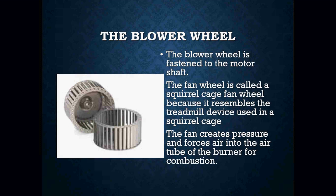The blower wheel is fastened to your motor shaft. The fan wheel can also be called a squirrel cage fan wheel because it resembles a treadmill device used in a squirrel cage. The fan creates pressure and forces air into the air tube of the burner to help support combustion. When servicing oil burners, we want to make sure that the blower wheel is nice and clean and not caked up with dirt and grime, because that will affect the way the burner actually operates.